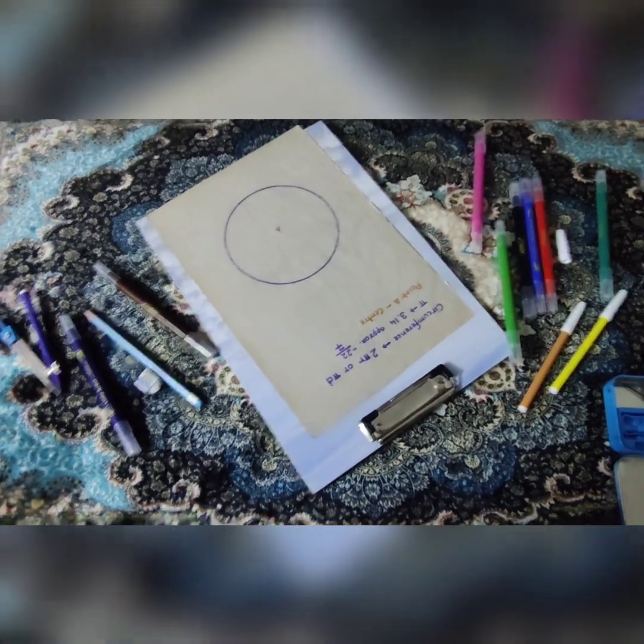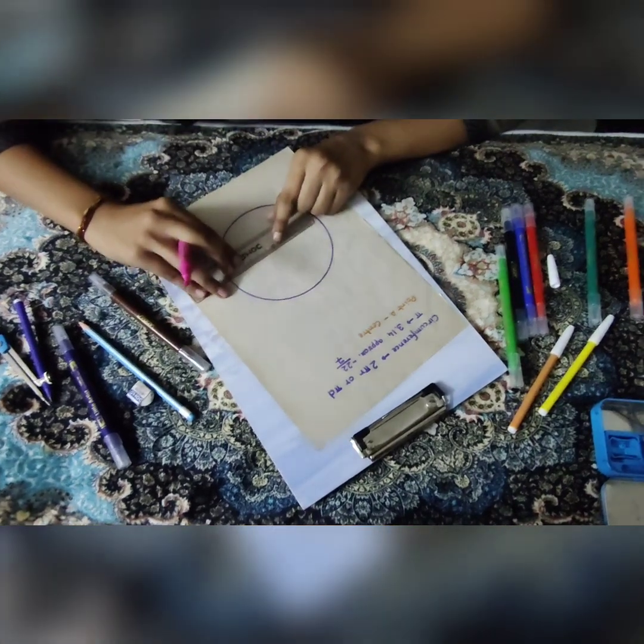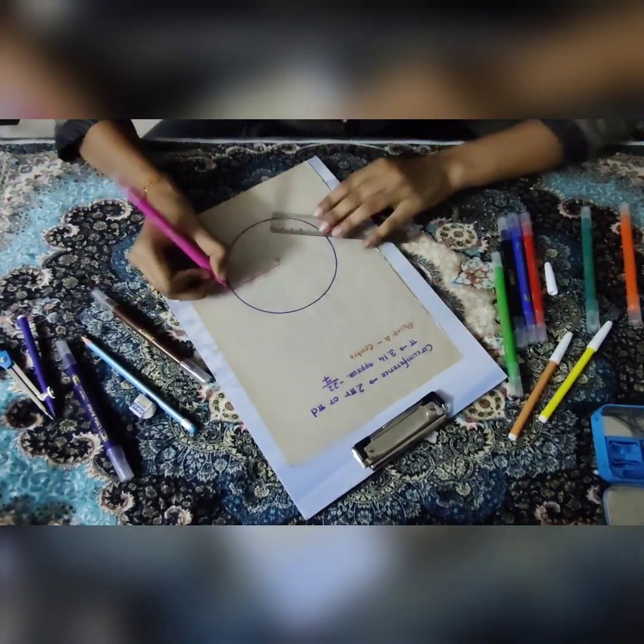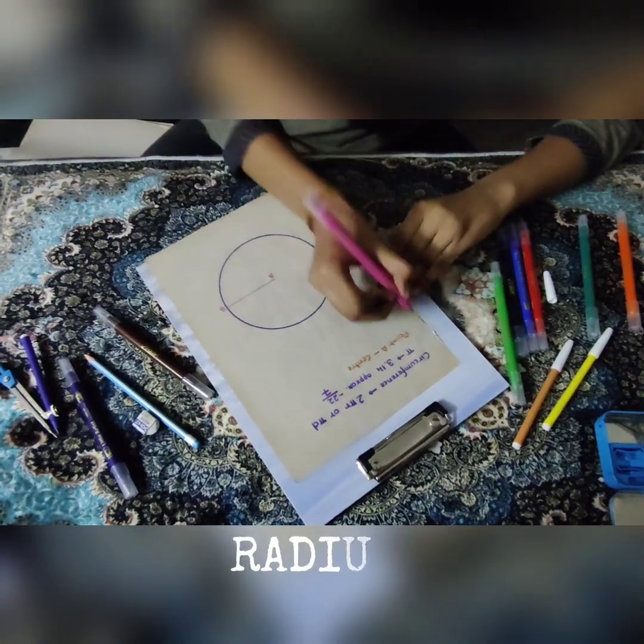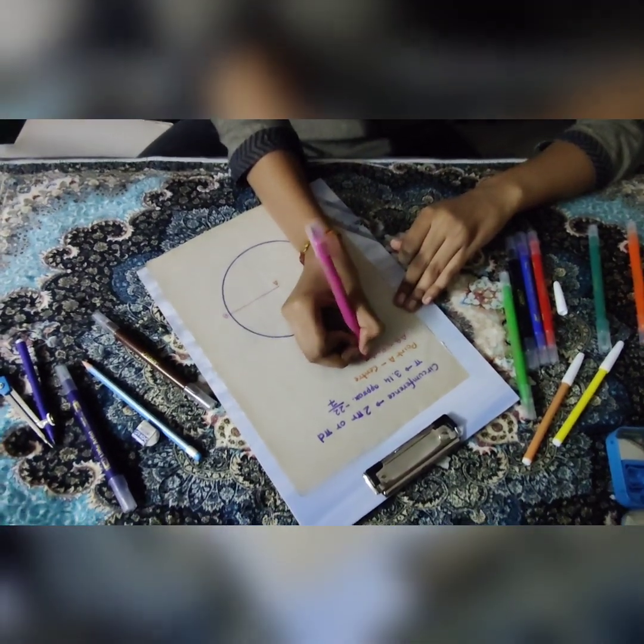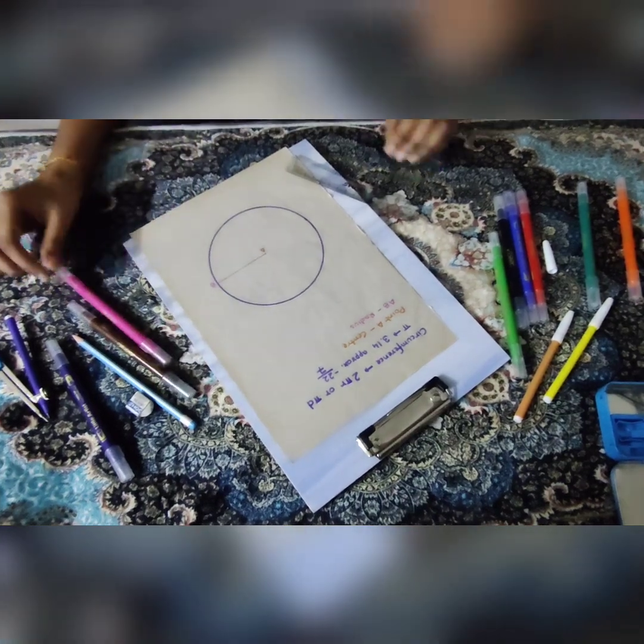From the center to the circumference we will extend the line to a point, say B. So AB is our radius. Radius is basically the length of the compass that we open to draw a circle.